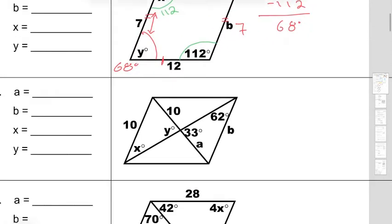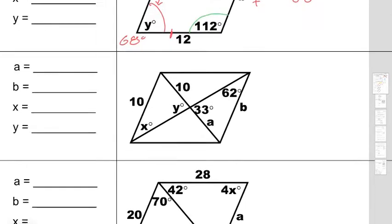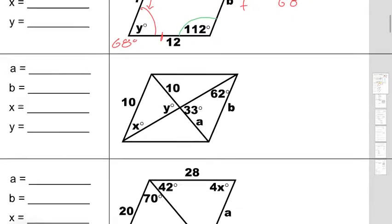Question 8. Same thing — it's a parallelogram, so all the properties of a parallelogram apply, which means the diagonals are going to bisect each other. And so if this side is 10, then I know a is also 10.